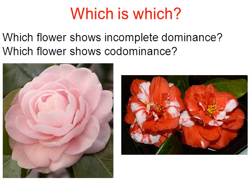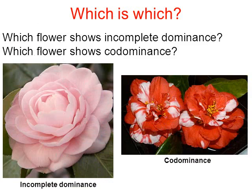To sum up: looking at two pictures — which flower shows incomplete dominance and which shows codominance? The pink flower on the left shows blending, which is incomplete dominance. The flower on the right shows both red and white petals visible at the same time — that's codominance. That's the end of this video; I hope you found it helpful for understanding the difference between codominance and incomplete dominance.